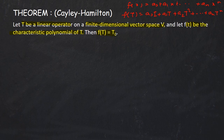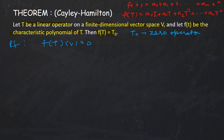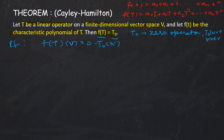Now let's do the proof. We shall show that f(T) of v equals 0, where T₀ is the zero operator, meaning T₀(v) = 0 for all v in V. To show f(T) = T₀, it is sufficient to show that for any arbitrary element v in V, f(T)(v) = T₀(v) = 0.